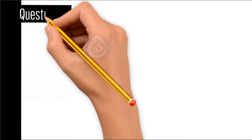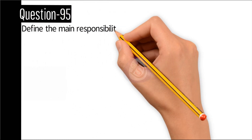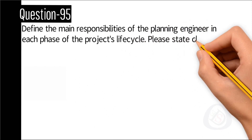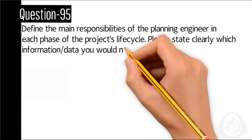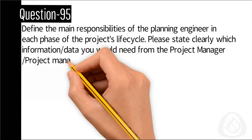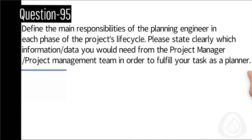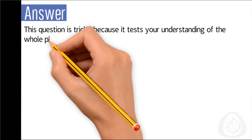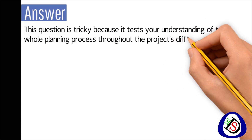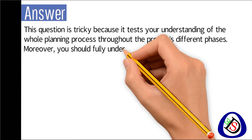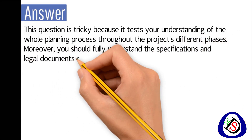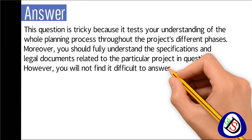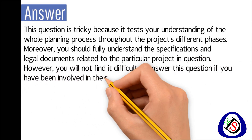Question number 95: Define the main responsibilities of the planning engineer in each phase of the project life cycle. State clearly which information or data you would need from the project manager and project management team to fulfill your task as a planner. Answer: This question is tricky — it tests your understanding of the whole planning process throughout the project's different phases. You should fully understand the specifications and legal documents related to the particular project in question.